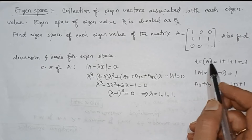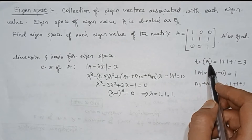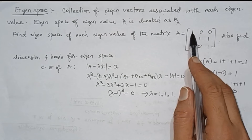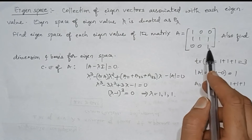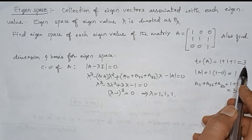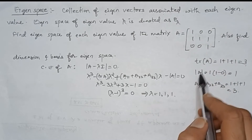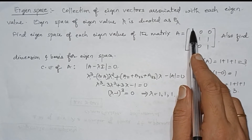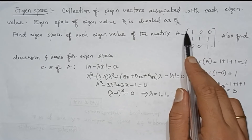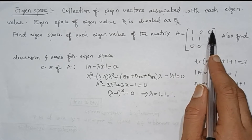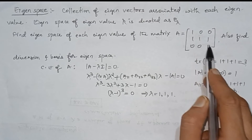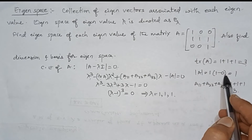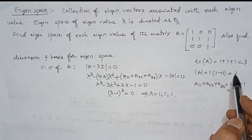The trace of A is the sum of diagonal elements: 1 plus 1 plus 1, which is 3. The determinant of A, evaluated along the first row and first column, gives 1 times (1 minus 0), which equals 1.